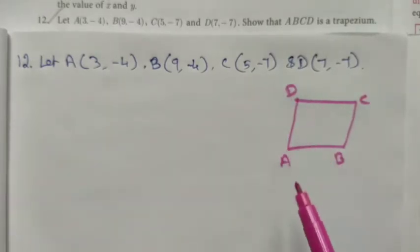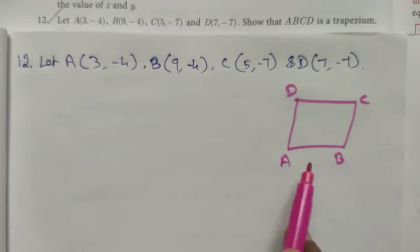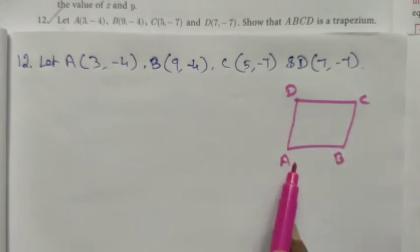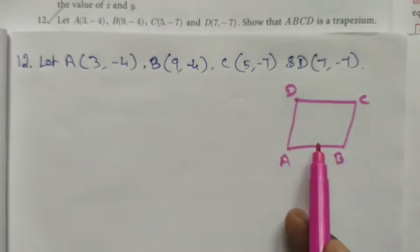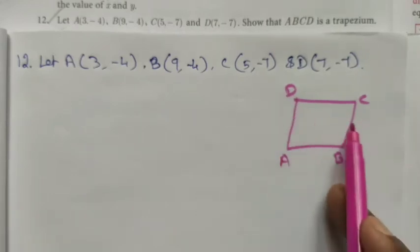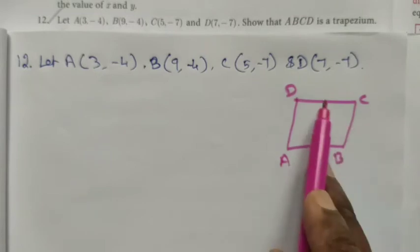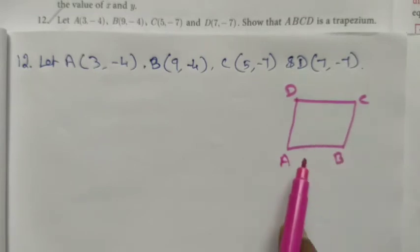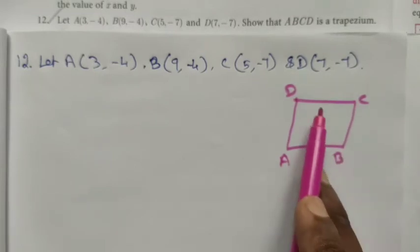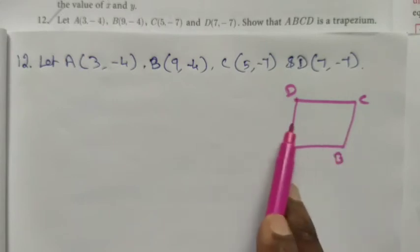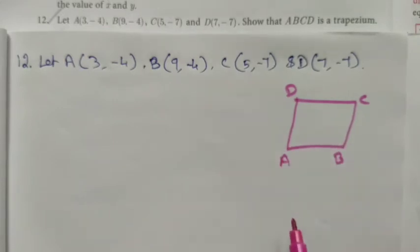We take ABCD as a quadrilateral. We don't know which two sides are parallel, so either AD is parallel to BC and those two sides are not parallel, or AB is parallel to DC and the other two sides are not parallel. Let's see the solution.